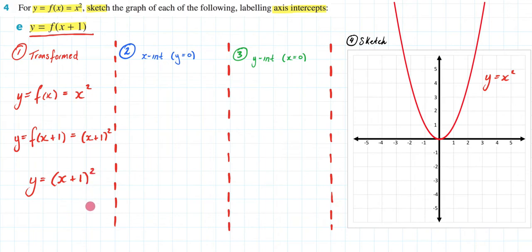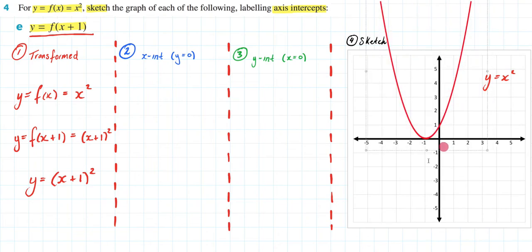Now hopefully you immediately recognize that this plus 1 here which exists inside my brackets is going to be shifting my graph one unit in the negative x direction. So I'm going to take my graph and I'm going to move it one unit in the negative x direction. So it's going to be there.